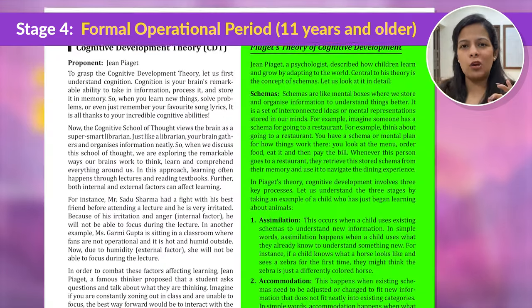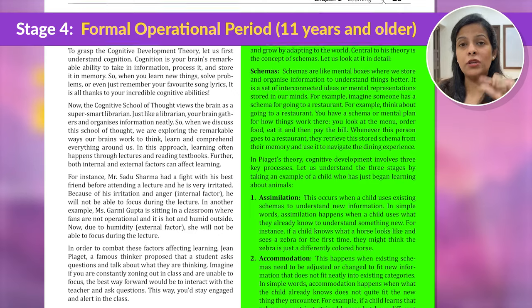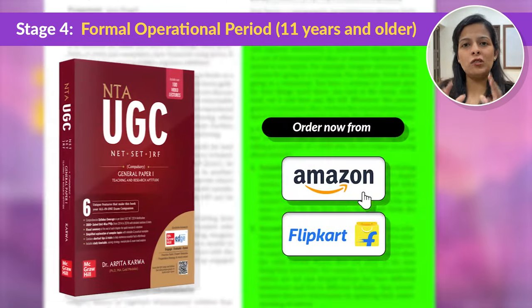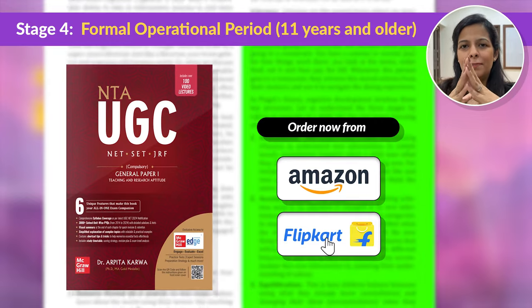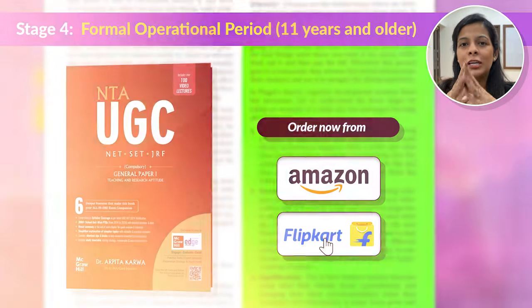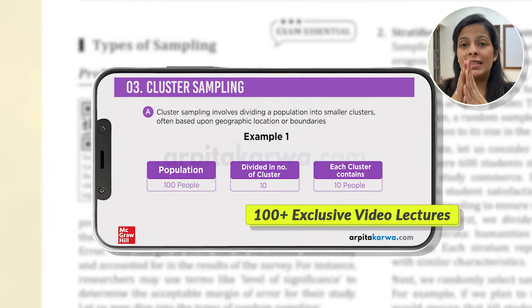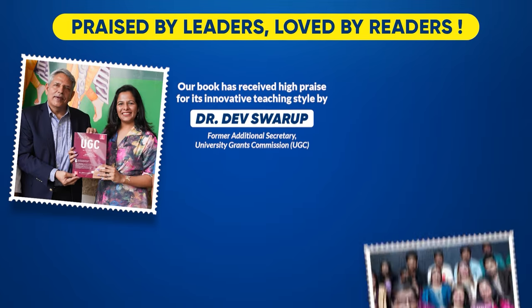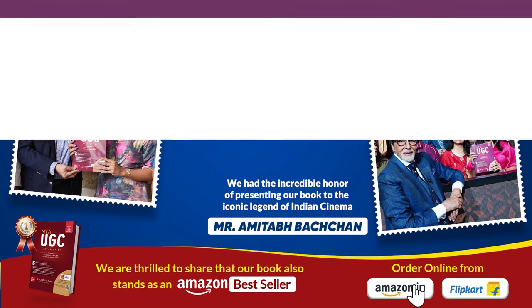There's also a very interesting topic of schema, which will help you understand cognitive development theory even better. You can find this topic explained in detail in our Amazon bestseller, the UGC Net Paper 1 book — India's only net book that comes with 100-plus video lectures and 3,000-plus unit-wise solved previous year questions, and has received appreciation from dignitaries like Amitabh Bachar.